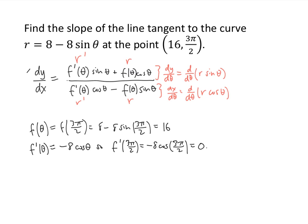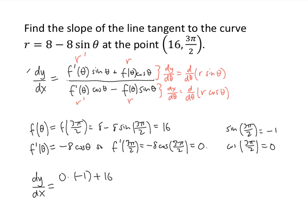We also need: sine of 3π/2 equals negative 1, and cosine of 3π/2 equals 0. So dy/dx equals f prime of theta (which is 0) times sine of theta (negative 1), plus f of theta (which is 16) times cosine of theta (which is 0), all divided by f prime of theta (0) times cosine of theta (0), minus f of theta (16) times sine of theta (negative 1). The numerator is 0 and the denominator is positive 16, giving us 0. So the slope of the tangent line is 0.